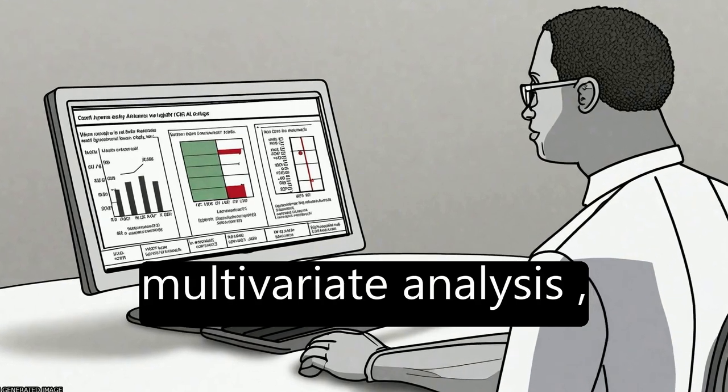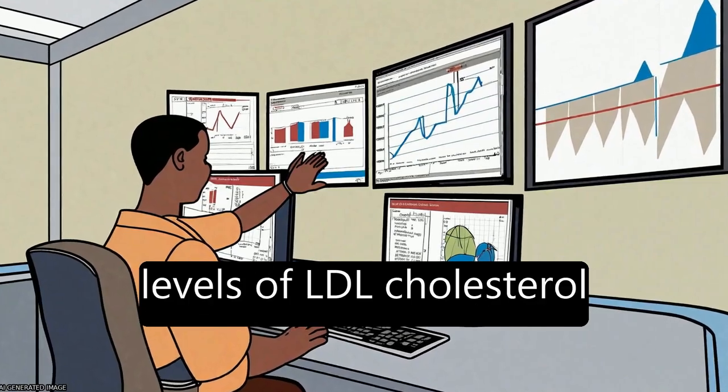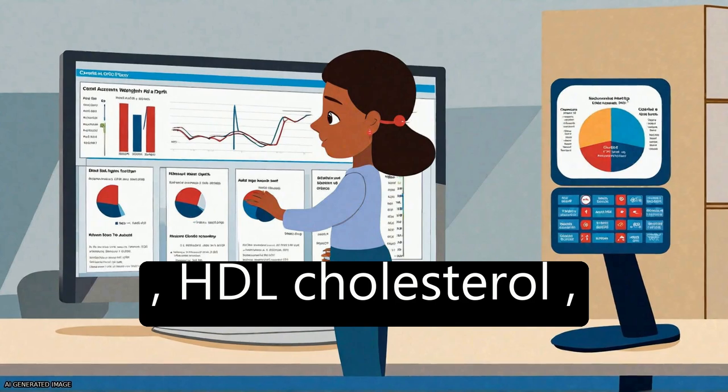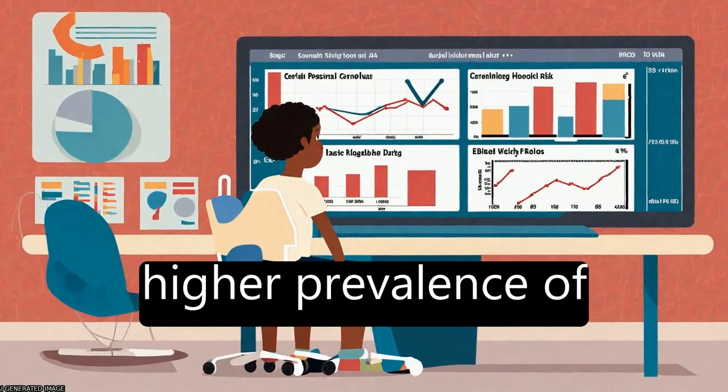On multivariate analysis, the normal weight centrally obese children were more likely to have significant adverse levels of LDL cholesterol, HDL cholesterol, triglycerides, and insulin, as well as a higher prevalence of parent.